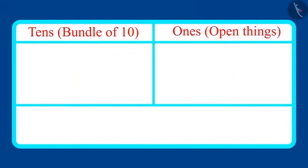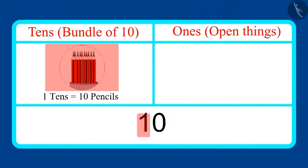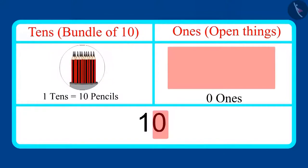Very good, Pinky. Thank you. Come on, children. Let us now write these numbers in the form of tens and ones. First of all, let's look at the number of pencils, which is 10. This means it has one ten and 0 ones.